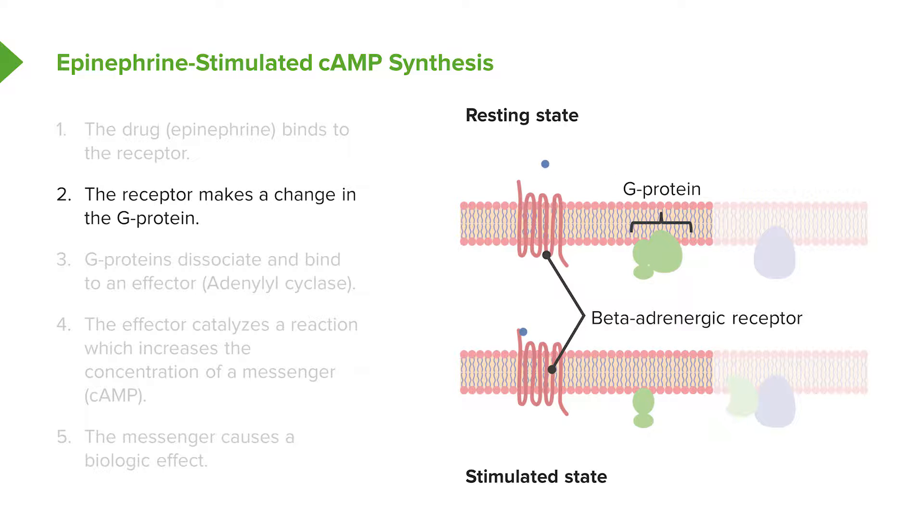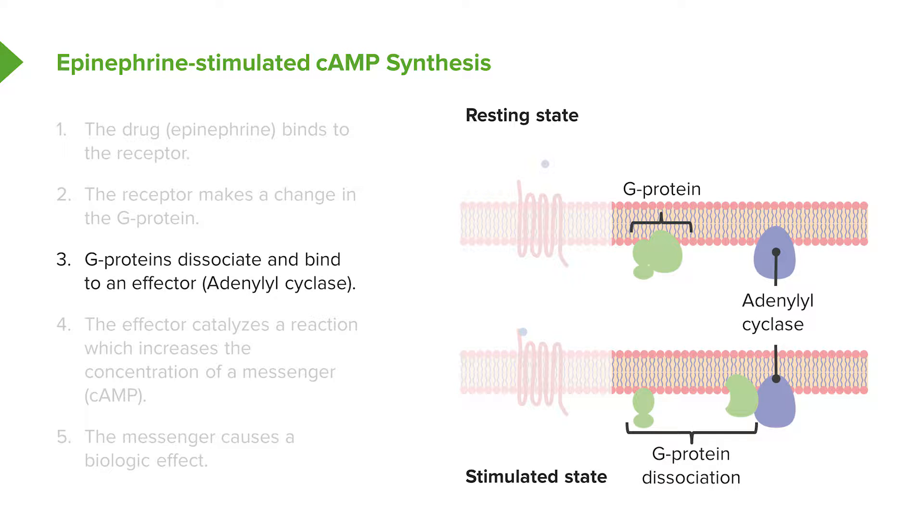The receptor makes a change at the G-protein, and what happens is the G-protein itself disassociates and binds to an effector molecule, in this case, adenylyl cyclase.